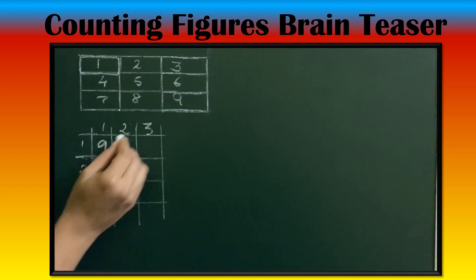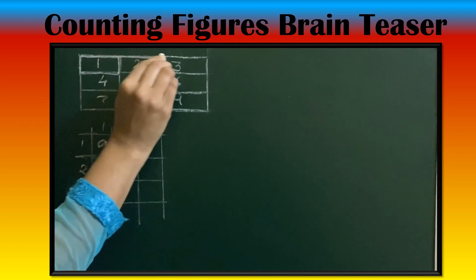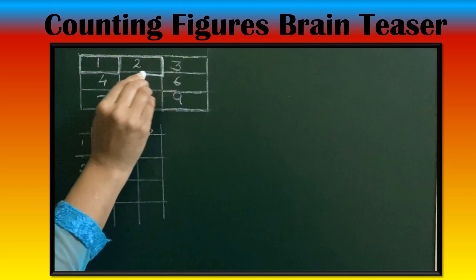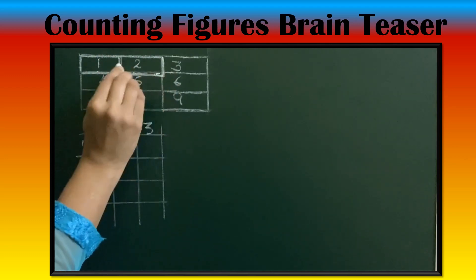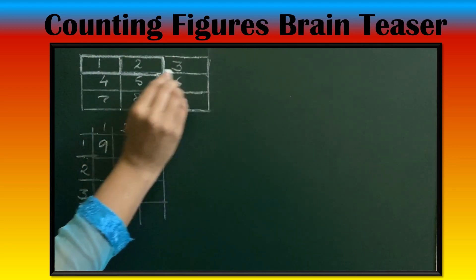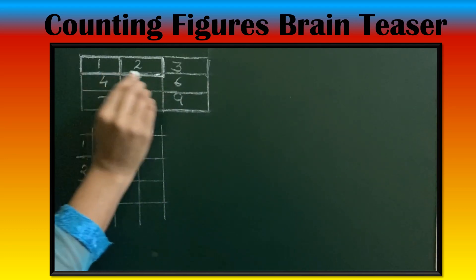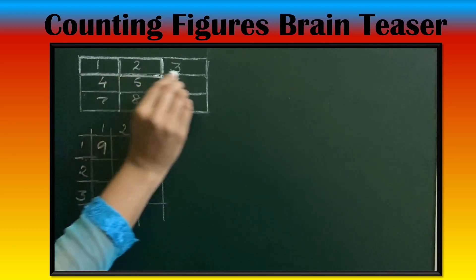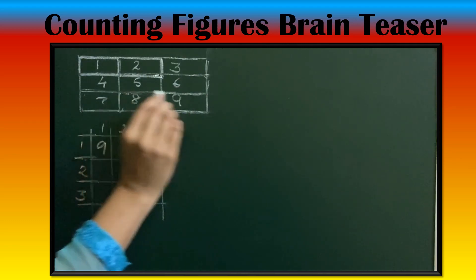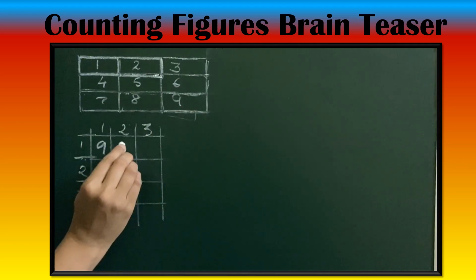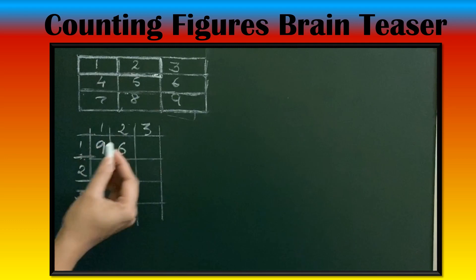Then 1 row, 2 columns. Cells 1 and 2 together is 1 rectangle; 2 and 3 together, 2nd rectangle; 4 and 5, 3rd; 5 and 6, 4th; and so on — totaling 6 rectangles of size 1 row, 2 columns.